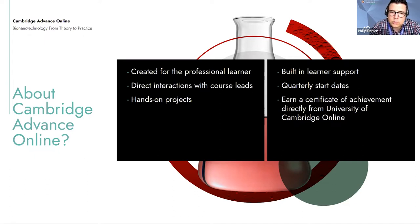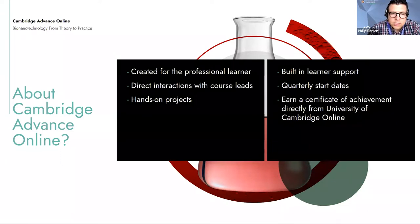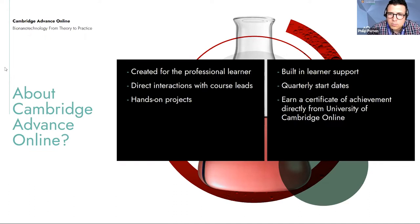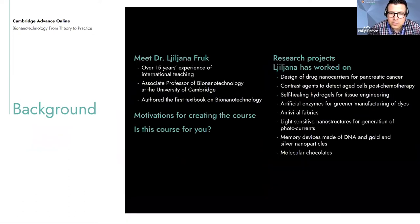We're currently working towards our next course starting on September 26th with a deadline to enroll by the 19th of September. One of the great things about the course is that it comes directly from the University of Cambridge — upon completion you will earn a certificate of achievement signed by the Vice Chancellor, which is great to use on social platforms, for your CV, or simply for your own recognition of achievement. I'll now hand over to Liliana.